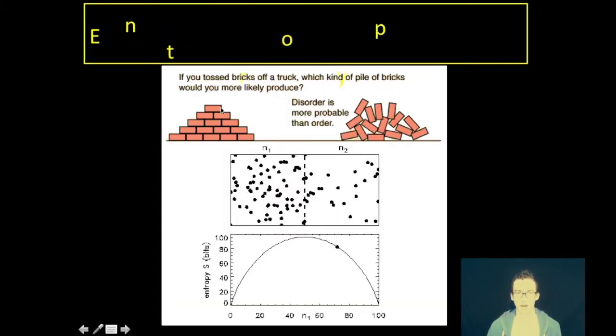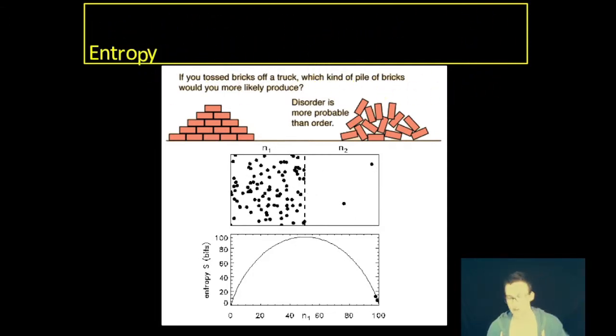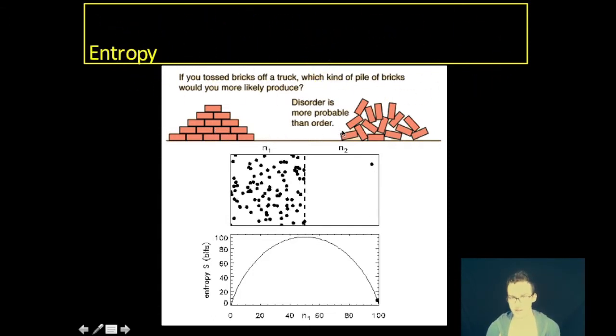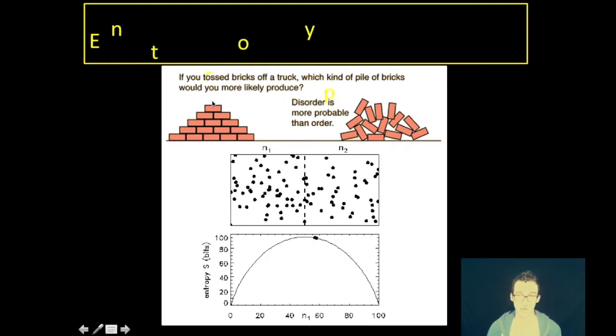All right, so back to the good stuff. If we think about entropy, I want you to think about tossing bricks off a truck. Think about the two piles of bricks that you see, the one on your left, the one on your right. Which of those two is most likely going to happen when you chuck a bunch of bricks off the back end of a truck? As nice as it would be if we could get this pile of bricks just neatly formed for us, the reality is we're most likely going to get a pile of bricks that looks like this. In other words, disorder is far more likely than a nice organized state.